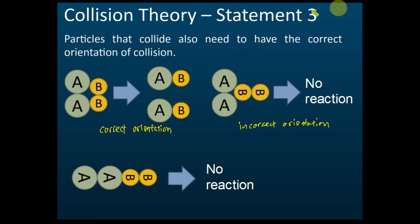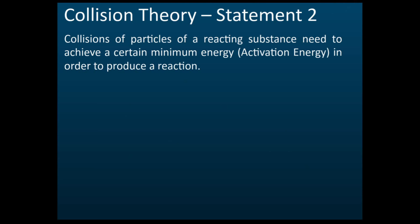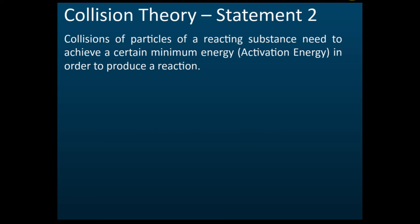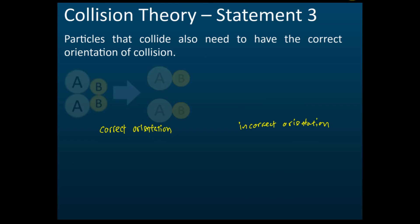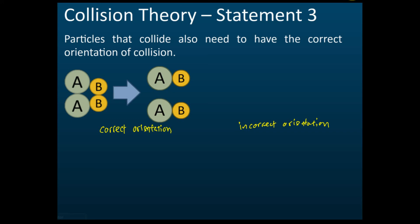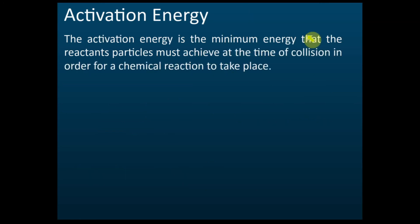So there are three statements in collision theory. Statement one: for a reaction to happen, the particles of the reactants must collide. Statement two: just colliding is not enough — the collision must have energy higher than the activation energy for the reaction to happen. Statement three: even if the energy is high, the reaction is not guaranteed — the orientation of the collision must also be correct. If the orientation is incorrect, there is no reaction.